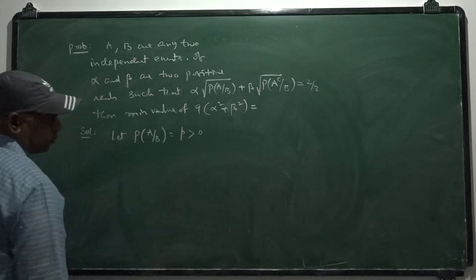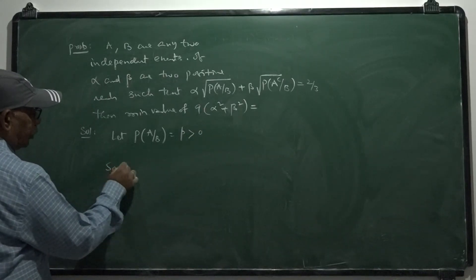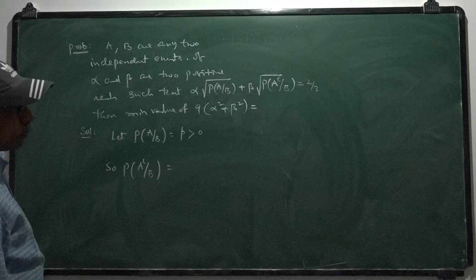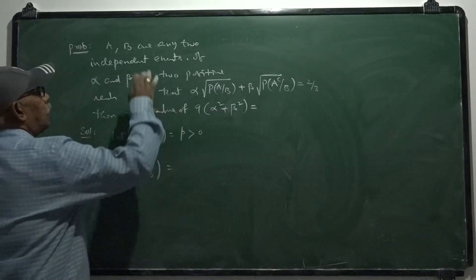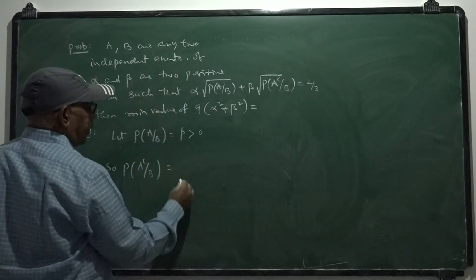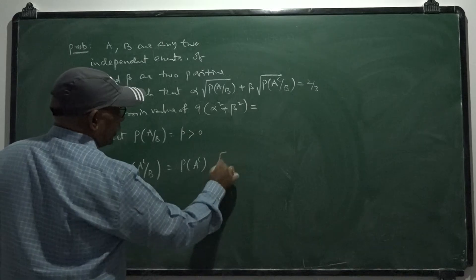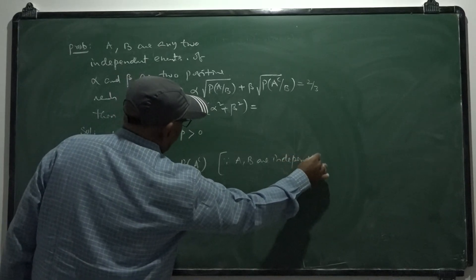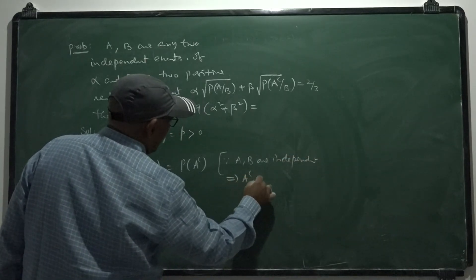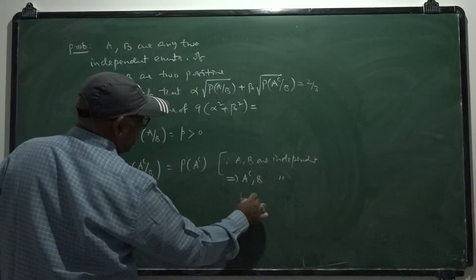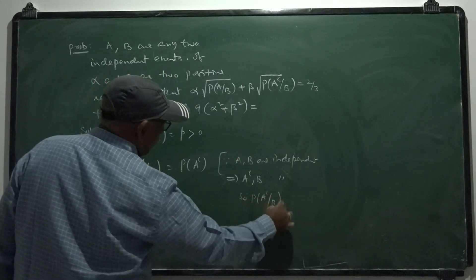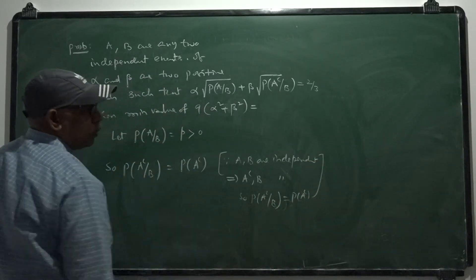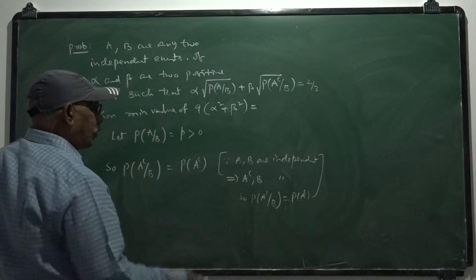The conditional probability of A complement given B: since A and B are independent, A complement and B are also independent. So probability of A complement given B equals probability of A complement itself, which is 1 minus probability of A. And probability of A given B equals probability of A itself, which is p. So probability of A complement given B is 1 minus p.